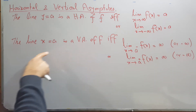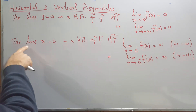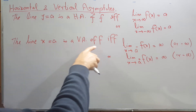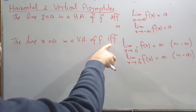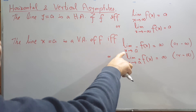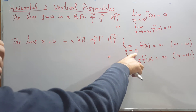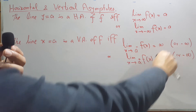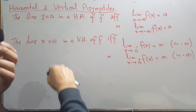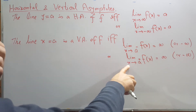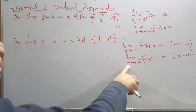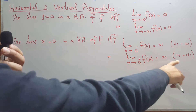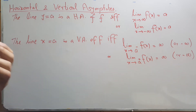Similarly, a vertical asymptote is the line x equals a of the function f if and only if, when you approach a from the negative side, it gives you positive or negative infinity, or if you approach a from the positive side, it gives you positive or negative infinity.